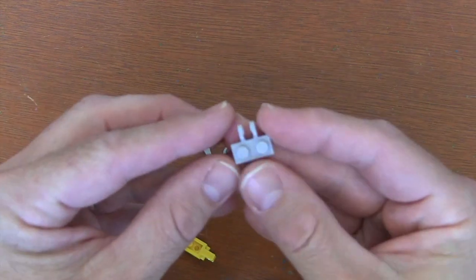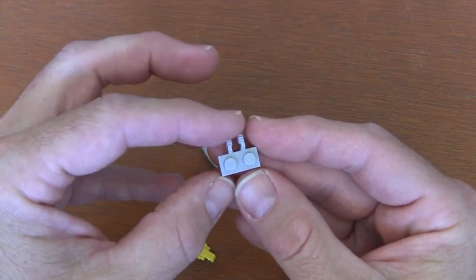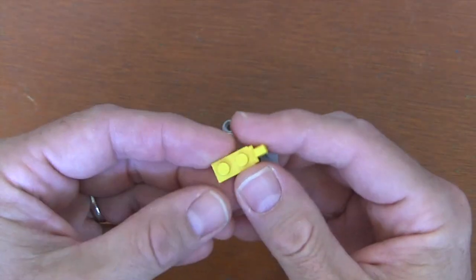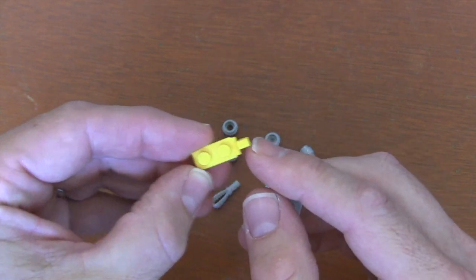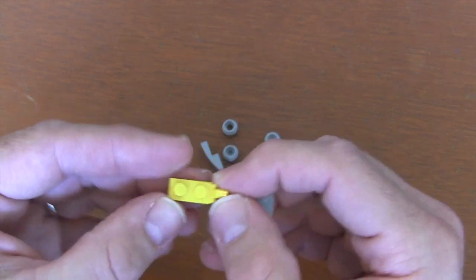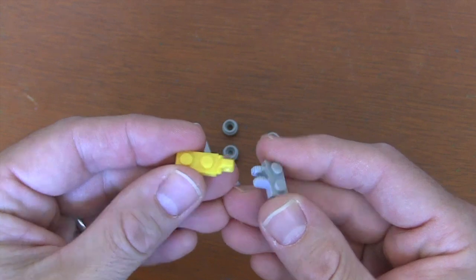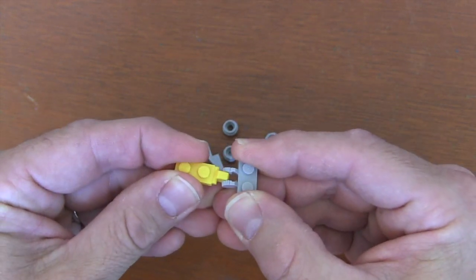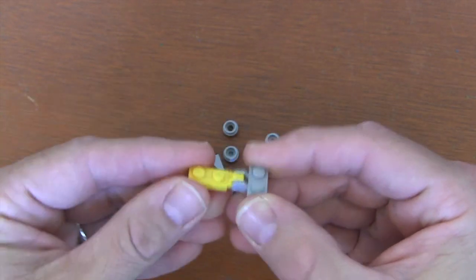We're gonna start with this 1x2 plate with these two finger grips on the side and a 1x2 plate with this one finger grip on the end here, and we're gonna put them together. Now I'm using yellow to be gold squadron, but you can use light blueish gray or whatever color you want. Once I have this together, I'm gonna have the base for my Y-Wing fighter.